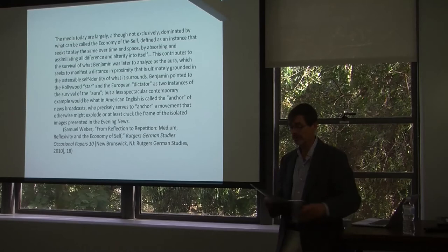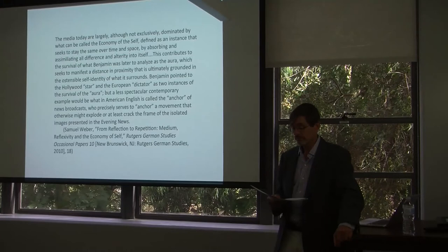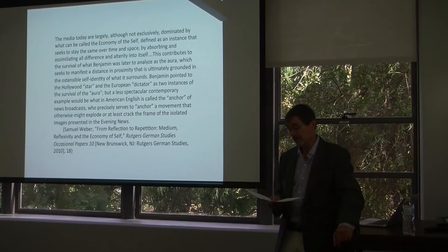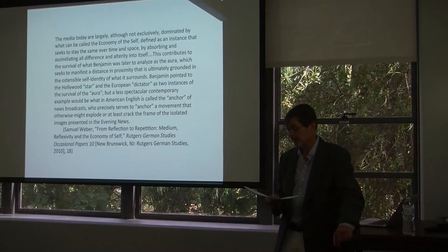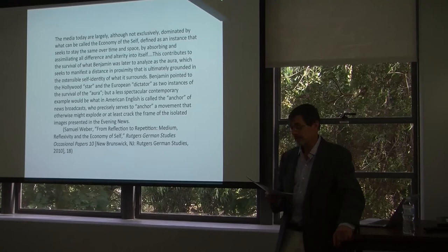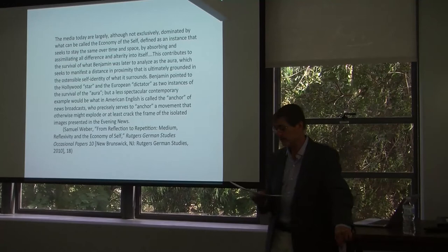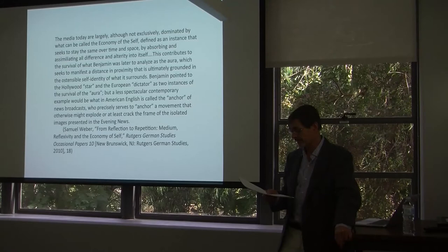Jephthah is a mighty man of valor, begotten by Gilead, but the son of a harlot. And at the beginning of the narrative, Gilead's legitimate sons expel him from their territory. When the Ammonites attack Israel, however, the elders of Gilead seek out Jephthah and ask him to lead them in battle. And Jephthah vowed a vow unto the Lord and said, If thou shalt without fail deliver the children of Ammon into my hands, then it shall be that whatsoever cometh forth in the doors of my house shall surely be the Lord's, and I will offer it up as a burnt offering.